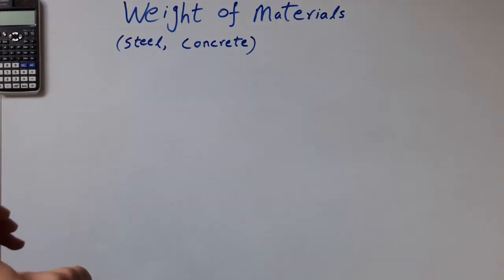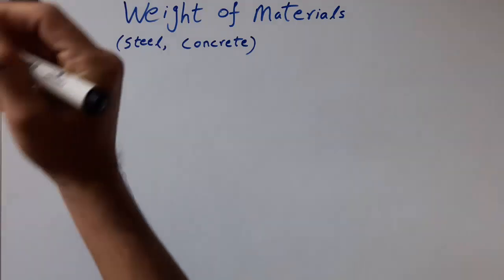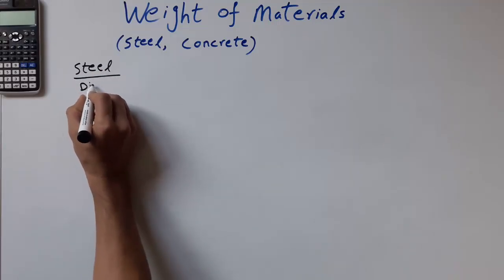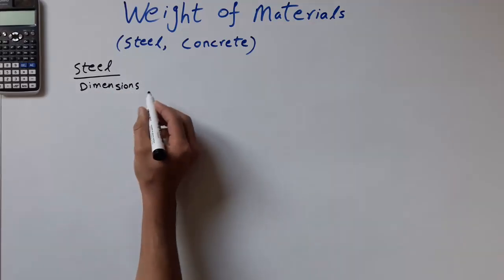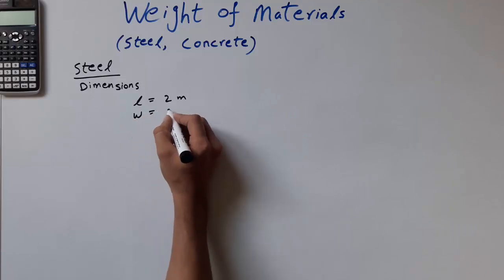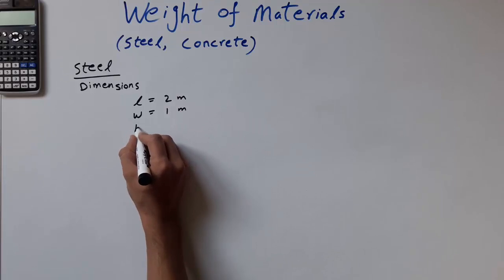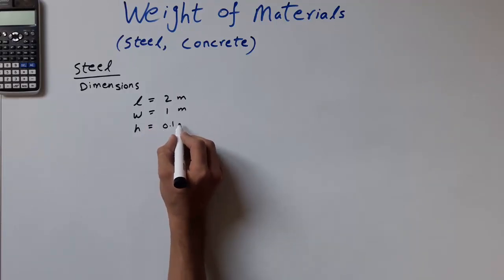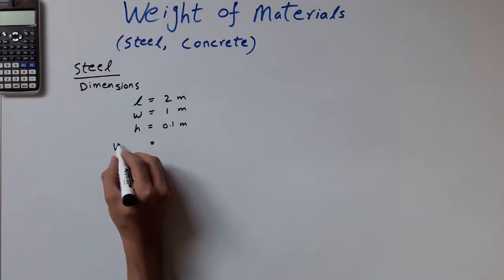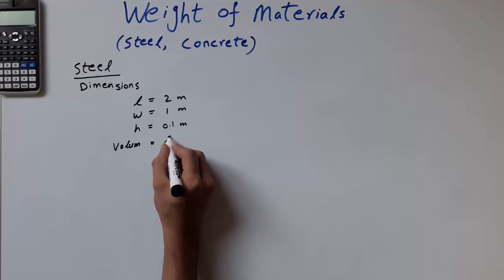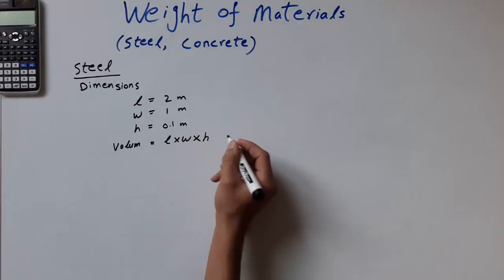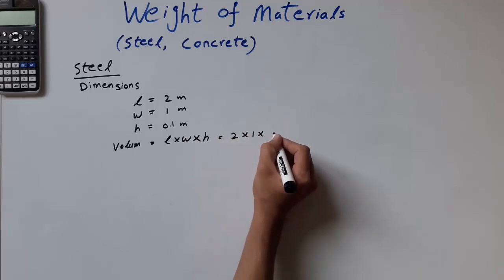First of all we need to define what kind of shape we have. Let's say we have a steel bar — I'm going to do steel first. We have a steel bar with dimensions: length is equal to 2 meters, width is equal to 1 meter, and height or thickness is equal to 0.1 meter. To calculate the weight we need to find the volume first: length multiplied by width multiplied by height or thickness.